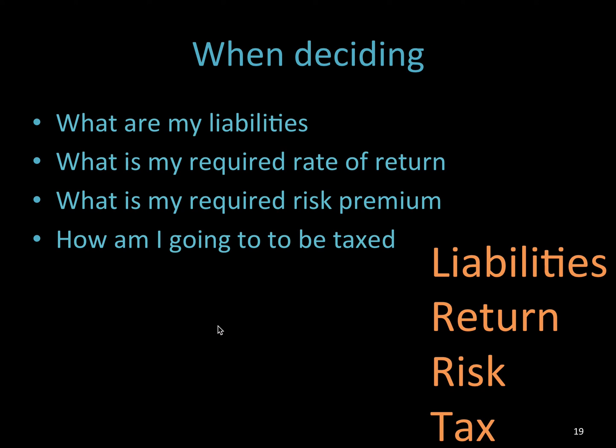When deciding what value you want to use, you always need to think: what are my liabilities, what is my required rate of return, what is my required risk premium, and how am I going to be taxed? You want assets that match your liabilities, meet your required rate of return, suit your risk appetite, and don't put you at a tax disadvantage — since various assets have different tax laws.